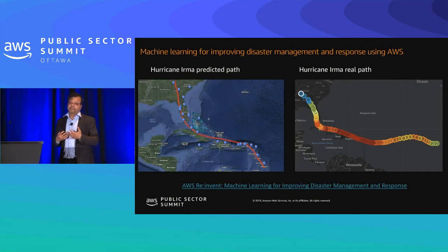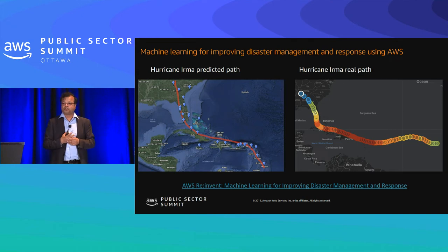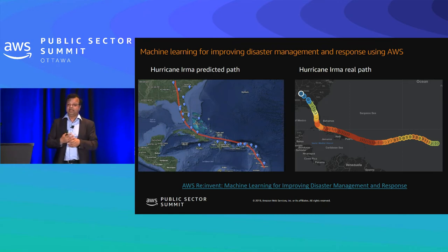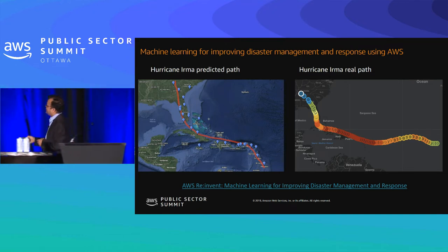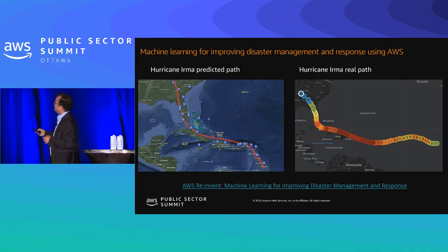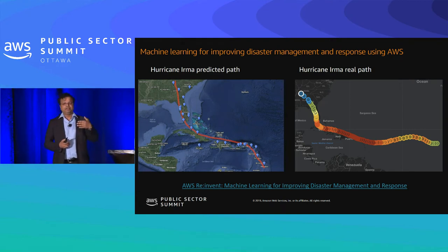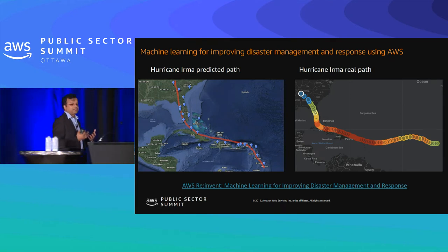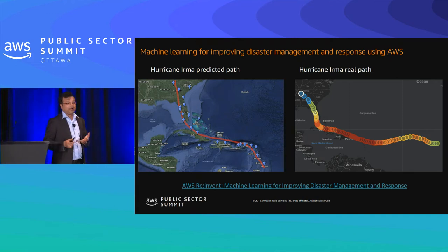We also did a study in collaboration with the National Science Foundation and other folks where you can train on social information you have and start predicting the path of a given hurricane. In this particular example, the left one is the predicted path and this is the real path. Imagine you can predict a hurricane 20 or 30 minutes before it reaches a given area — that will hugely help the disaster response team. We plan to make some of this public and give it to Red Cross or something similar for a pilot.